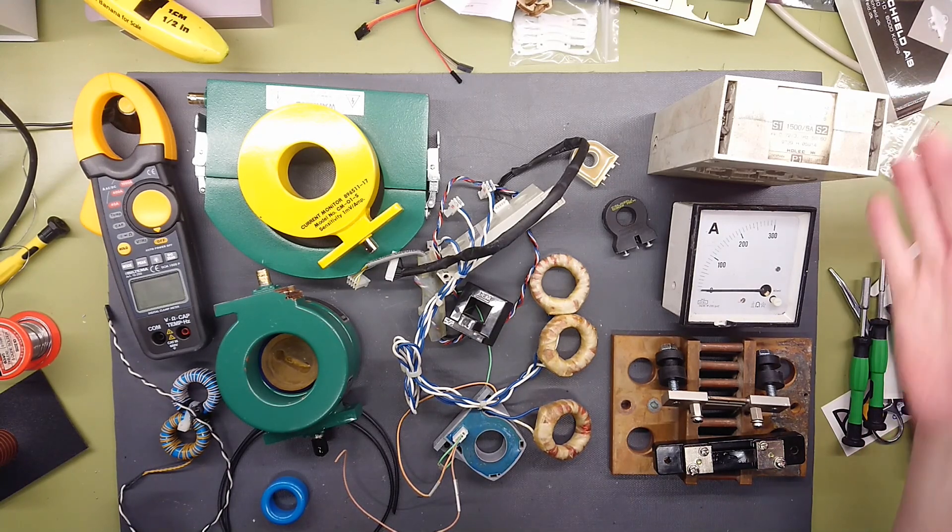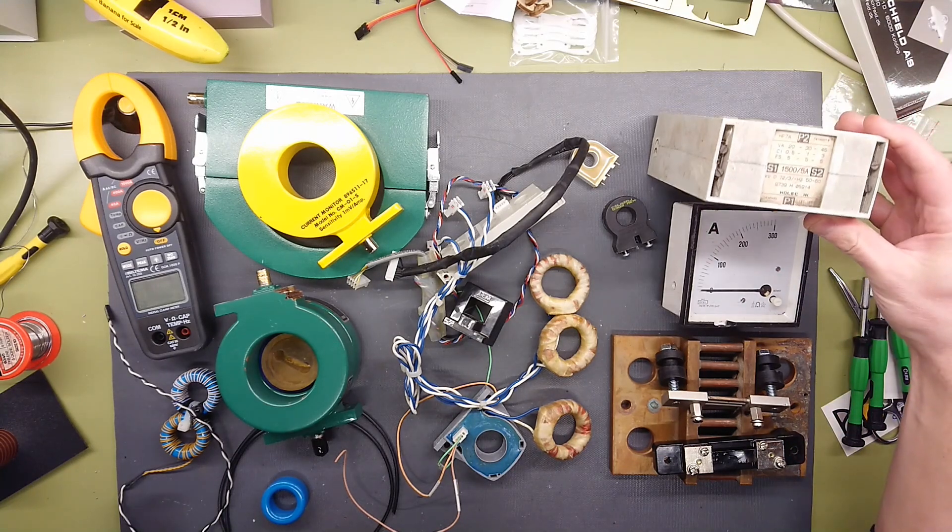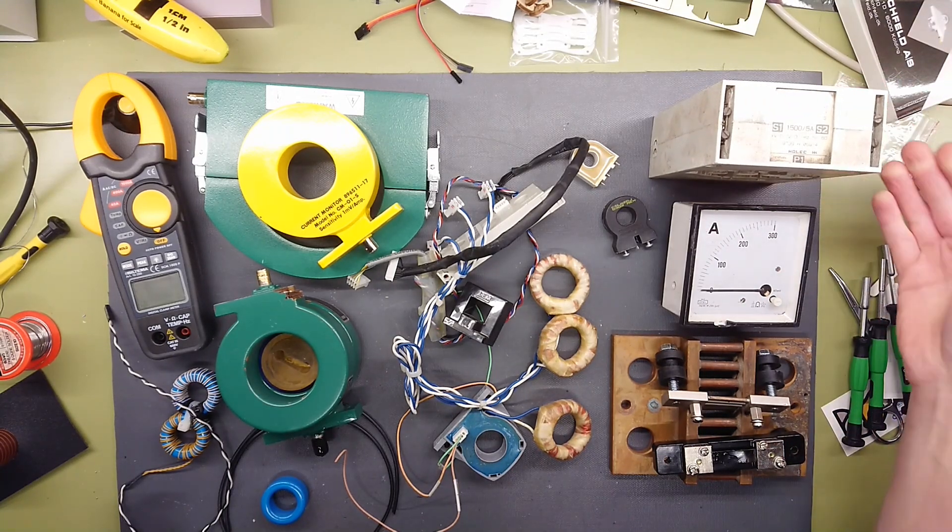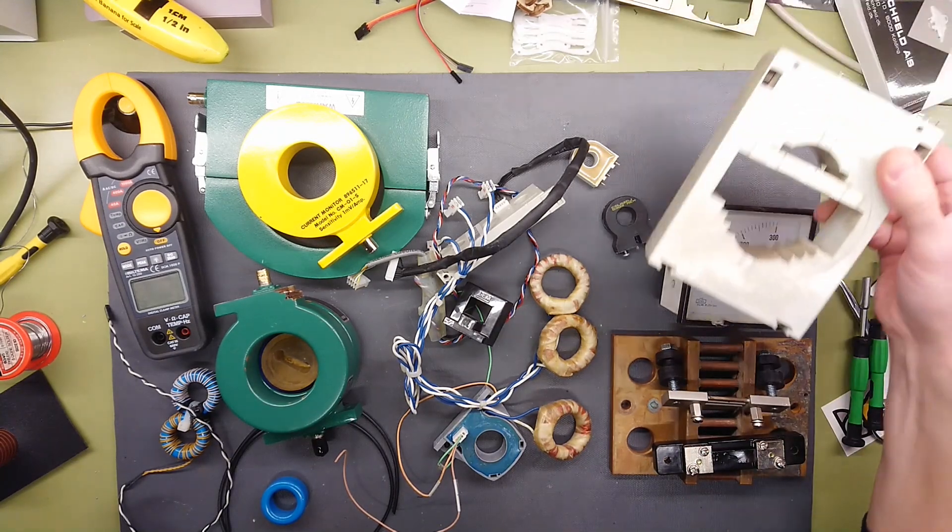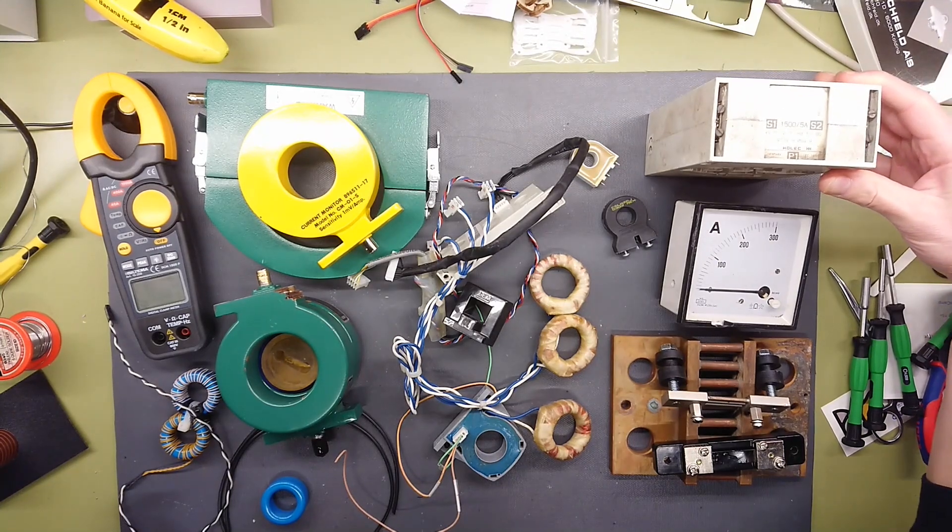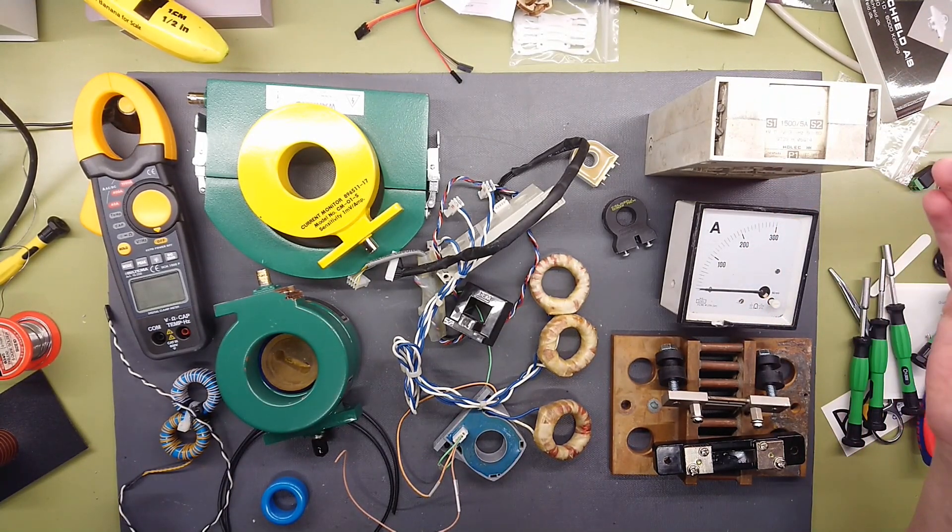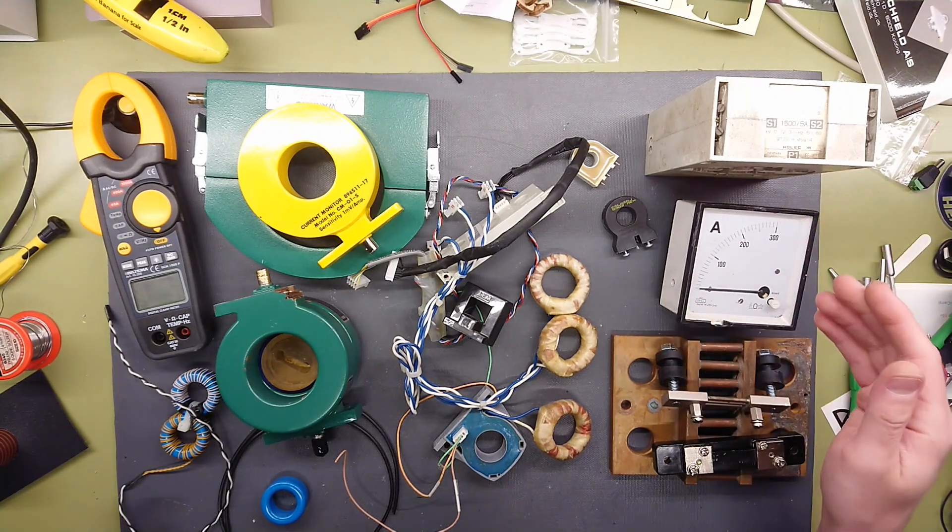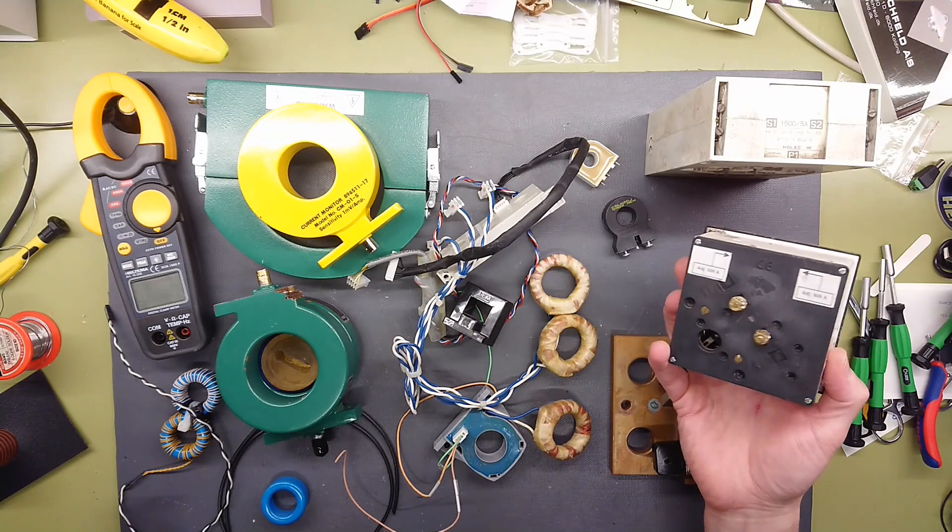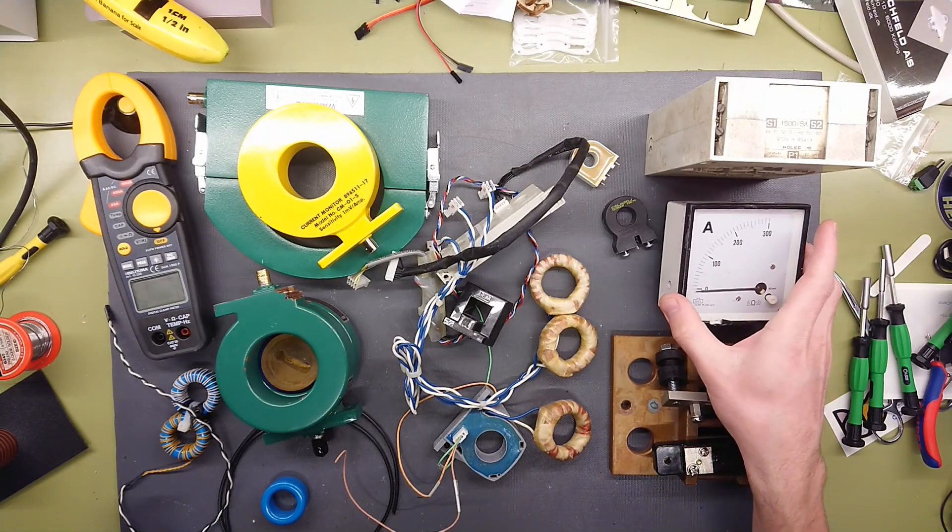Over here in what we can call the old-school section is where we have the good old big current transformers that just transform current from a large one that goes through the middle of this transformer. It has a ratio 1500 to 5 amps, and that is because it's a standard that a very large amount of these current meters that you can find are rated for a 5 amp current input.